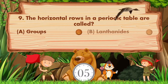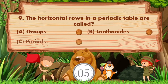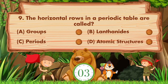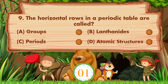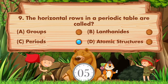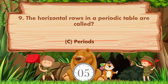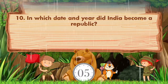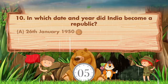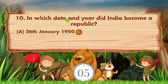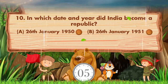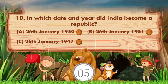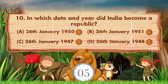The horizontal rows in a periodic table are called: Option A: Groups, B: Lanthanides, C: Periods, D: Atomic structures. Answer is option C, Periods. In which date and year did India become a republic?